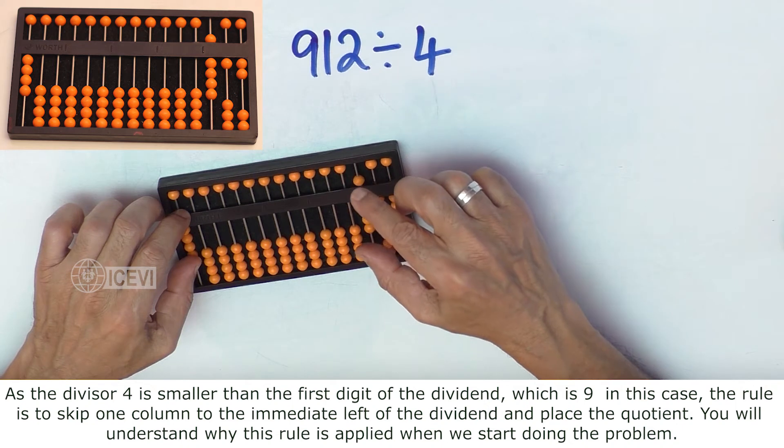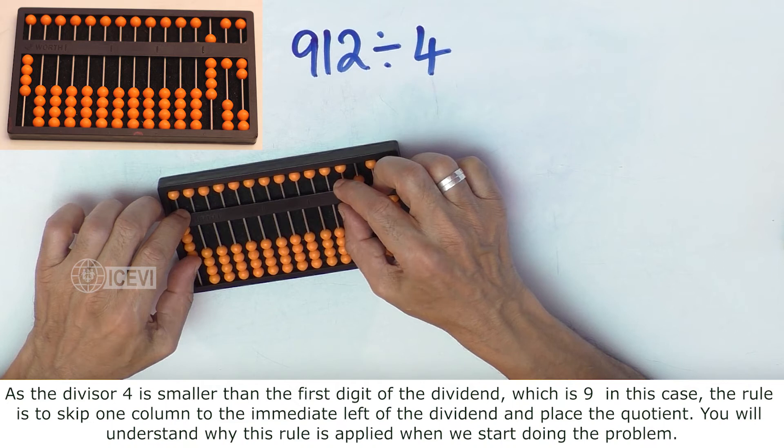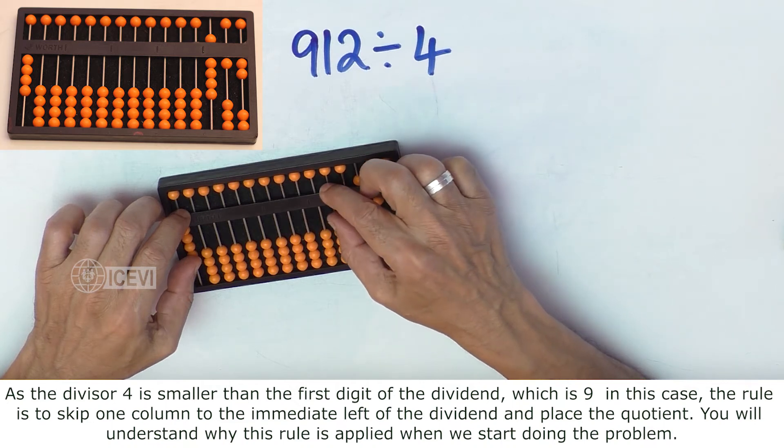As the divisor 4 is smaller than the first digit of the dividend, which is 9 in this case, the rule is to skip one column to the immediate left of the dividend and place the quotient.